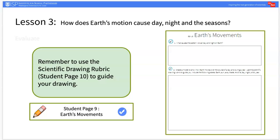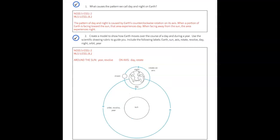In the Evaluate portion of this lesson, students will complete a formative assessment. Students will explain what causes the pattern of day and night. They will also develop a pictorial model of how the Earth moves over the course of a day and the year. Have students refer back to the scientific drawing rubric to assess their drawing.